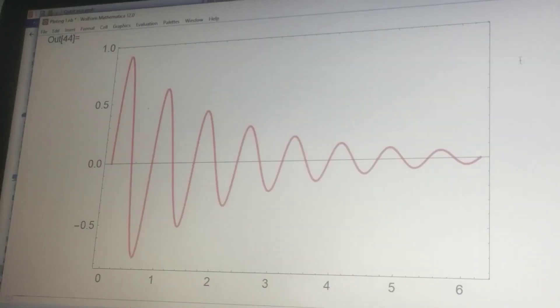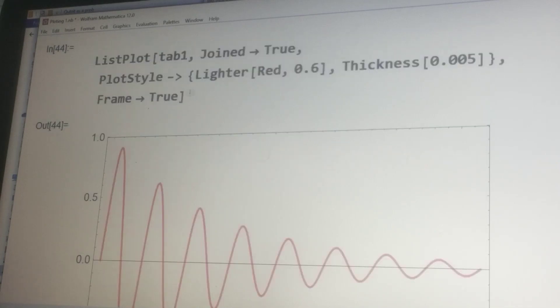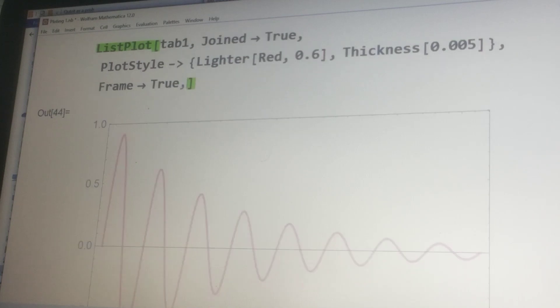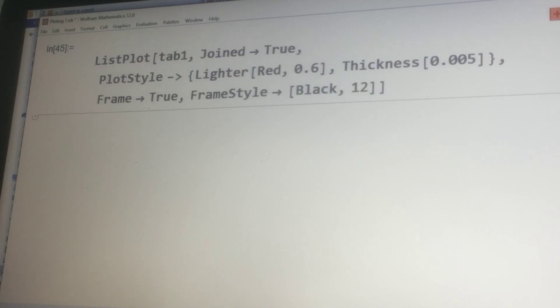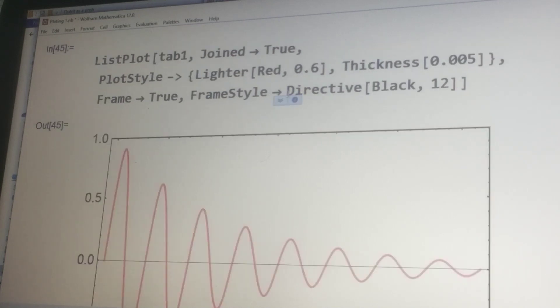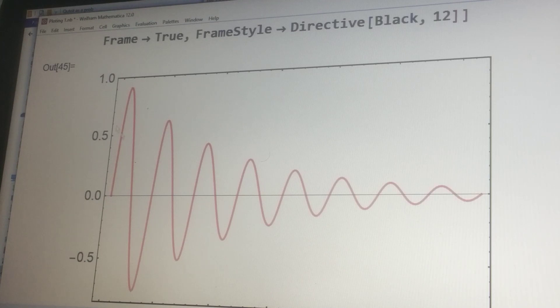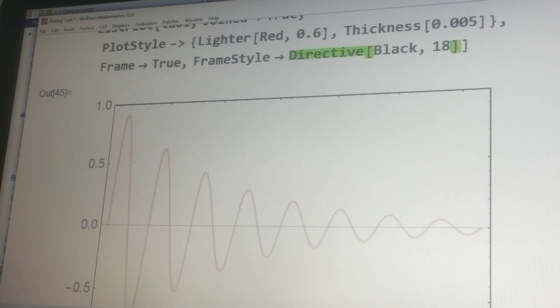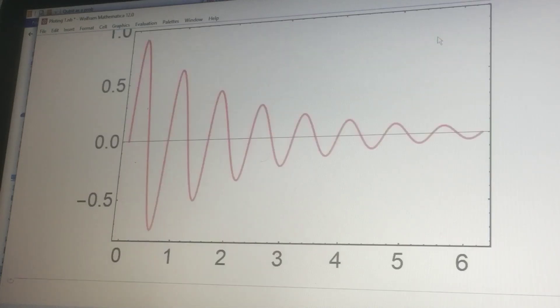Similarly, I can add FrameStyle. Let me add FrameStyle, Black, and I want to add this Black 12. This way you can change the size of the frame. For example, if I set this to 18, you will further increase. So this is red and the size has increased.